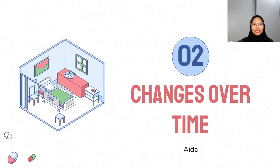My name is Aida Zahira and my matrix number is 200426. I am going to proceed with the next part of the presentation, which is the changes over time. In this part, I will discuss in detail the broad spectrum of foodborne infections that has changed dramatically over time.